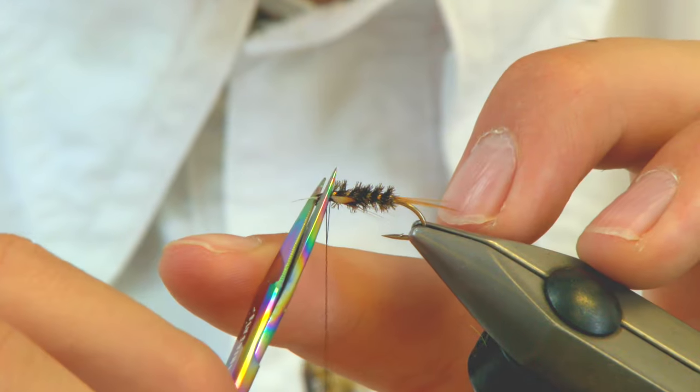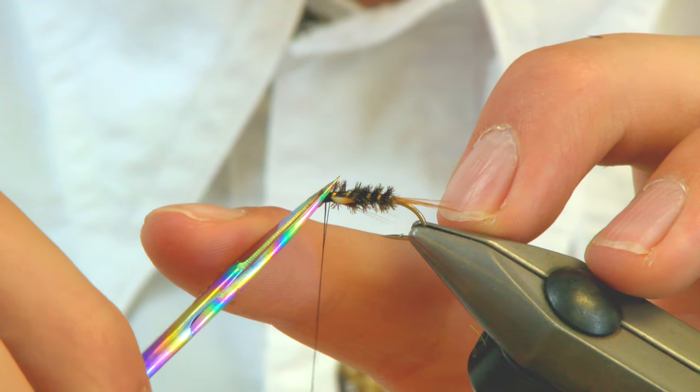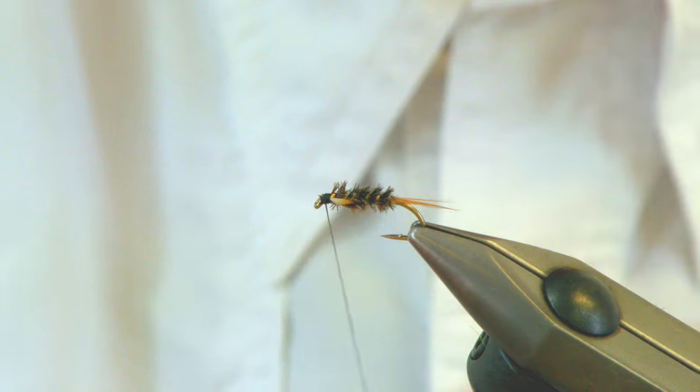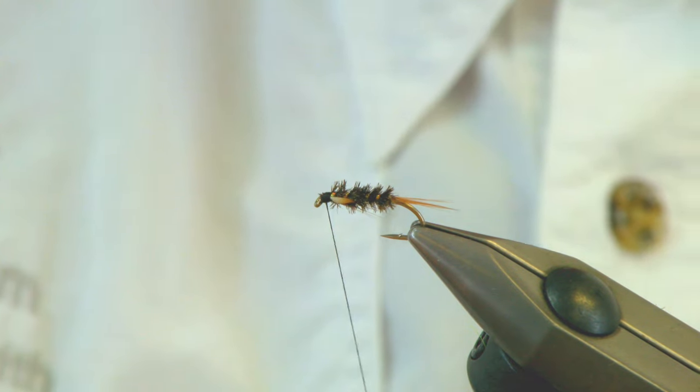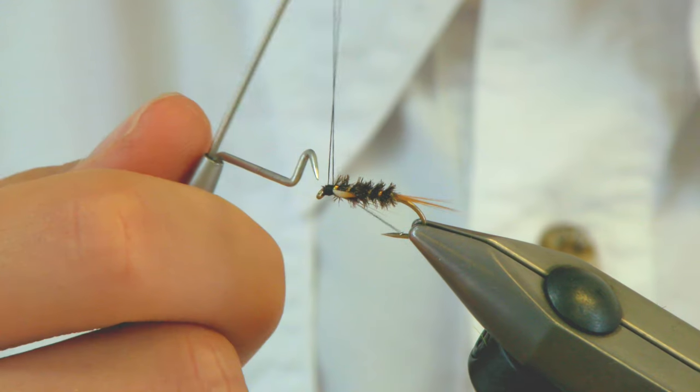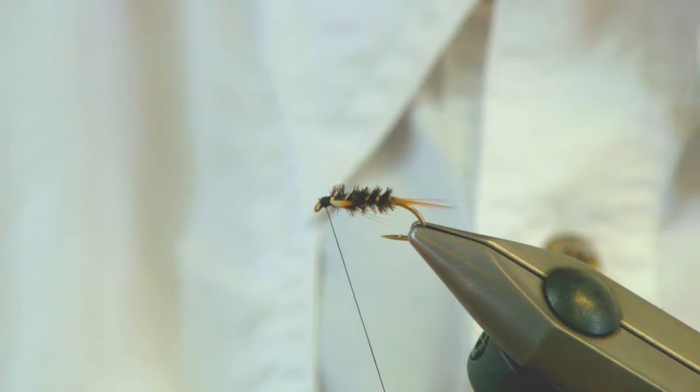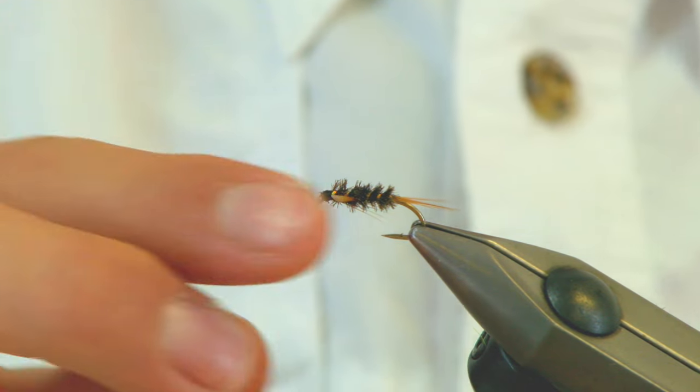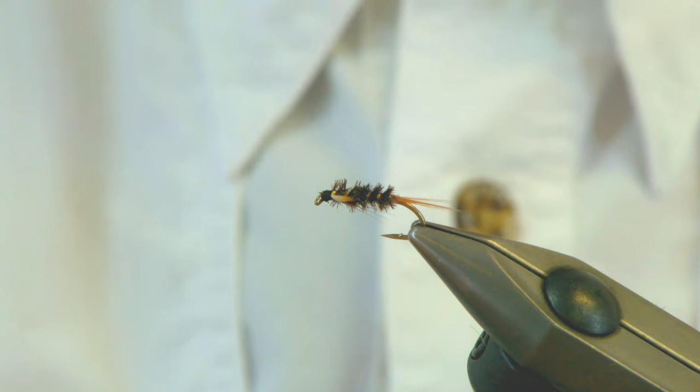And you're going to come up and just trim that all off. And there's your fly. Nice whip finish. Now you can leave it like that, you can put a little bit of varnish on just to secure it.